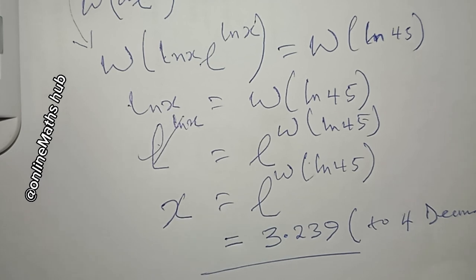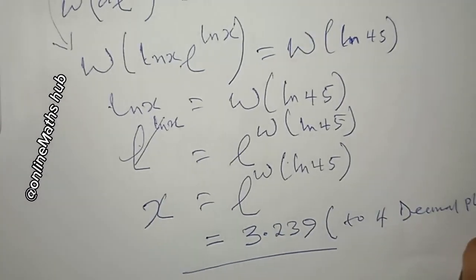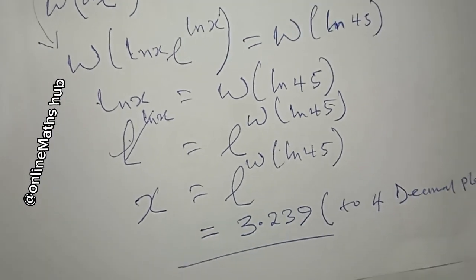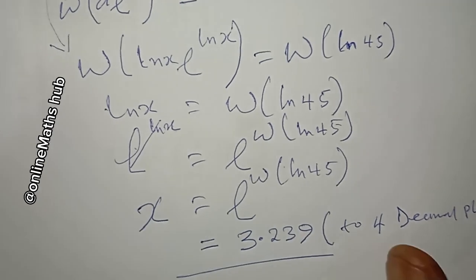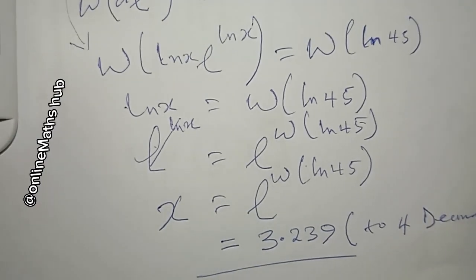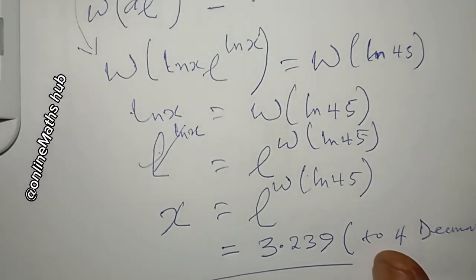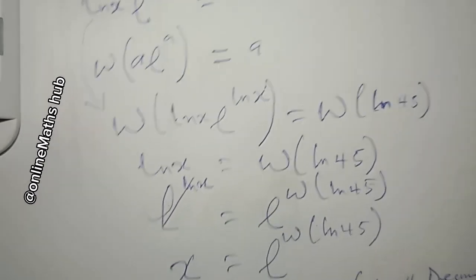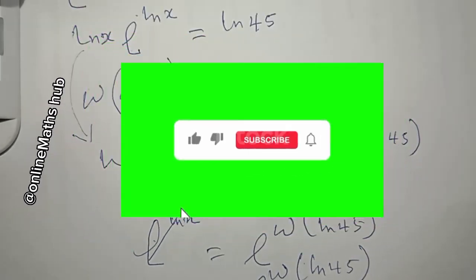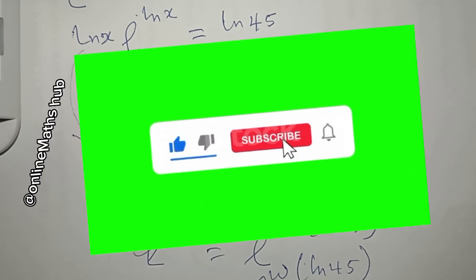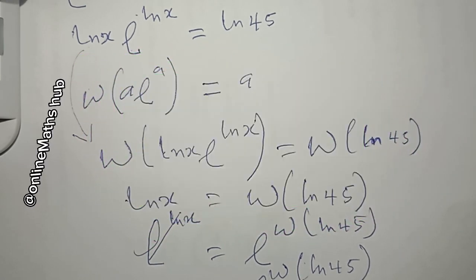So x ≈ 3.2309 is the value that satisfies x^x = 45. That's basically how you go about solving problems like this. If you understood, let me have your thoughts in the comment section, drop any questions there too, like the video, and subscribe to the channel for more updates. See you in the next video!